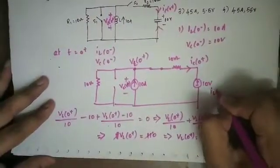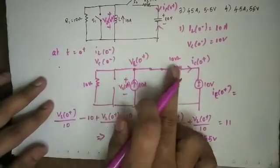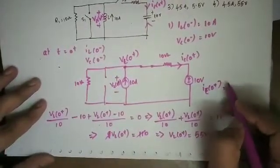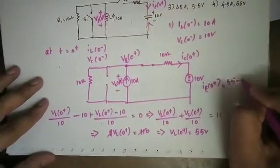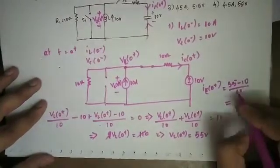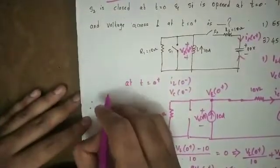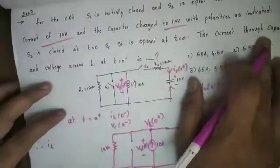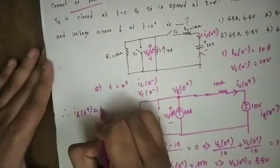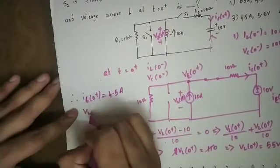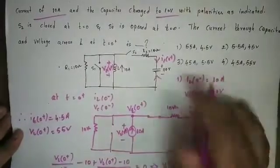Now we can find IC(0+). IC(0+) = [VL(0+) - 10] / 10 = [55 - 10] / 10 = 45/10 = 4.5 amperes. Therefore IC(0+) = 4.5 amperes and VL(0+) = 55 volts. The fourth option is the correct answer.